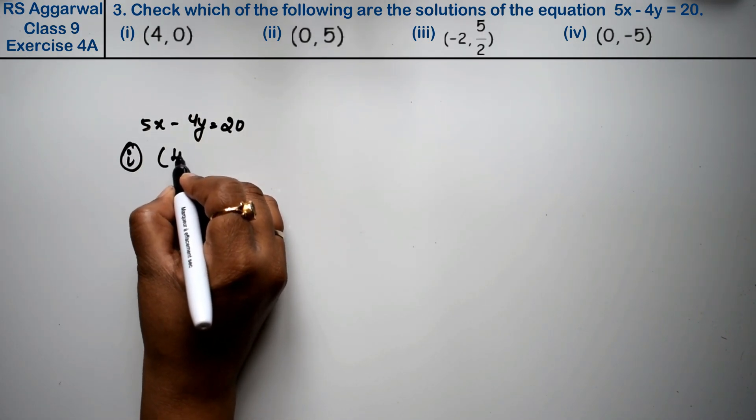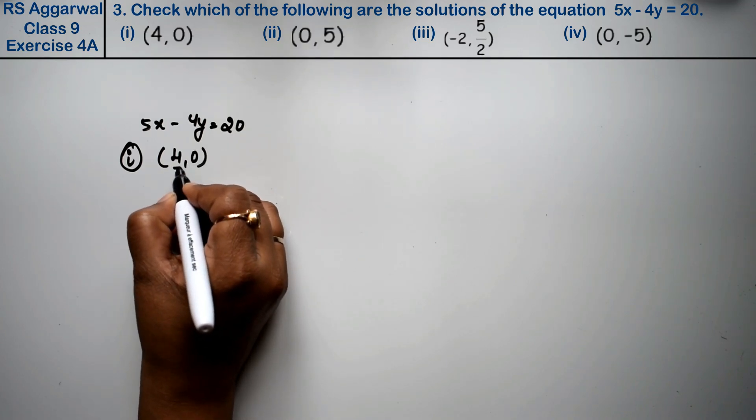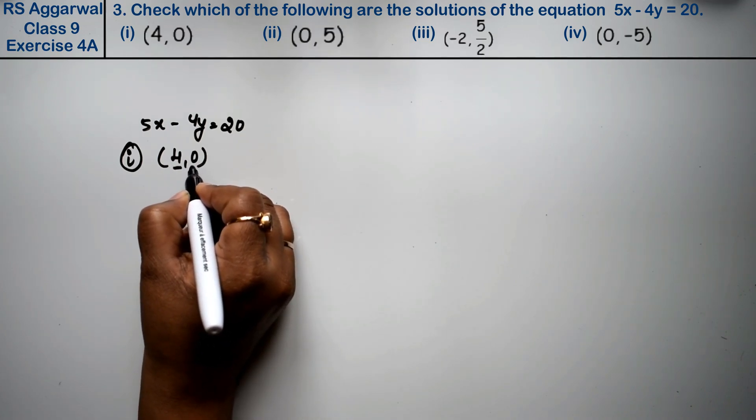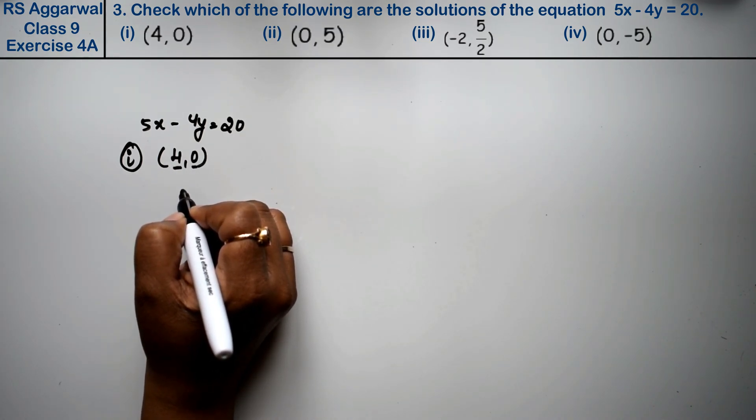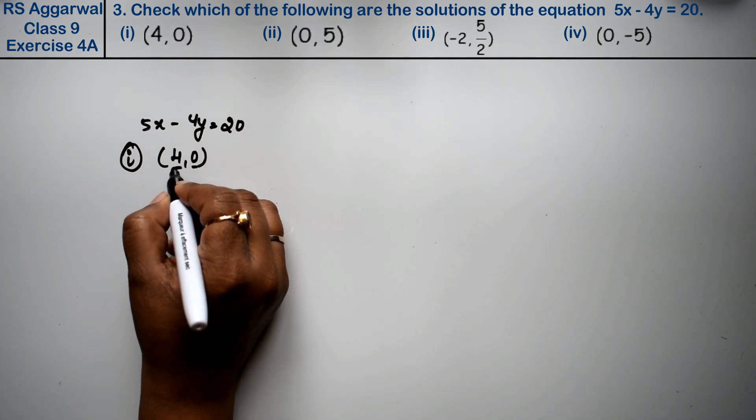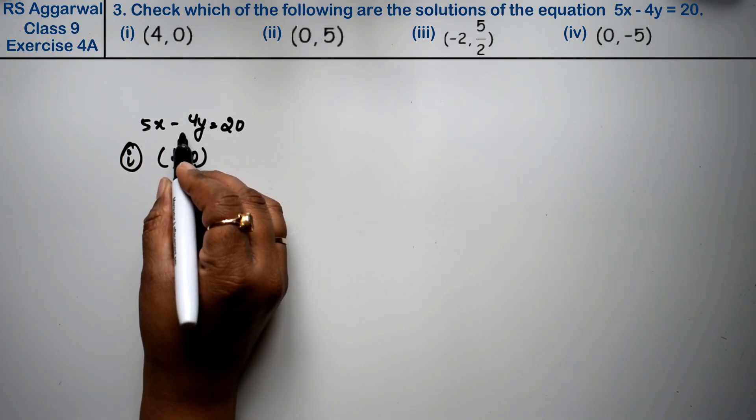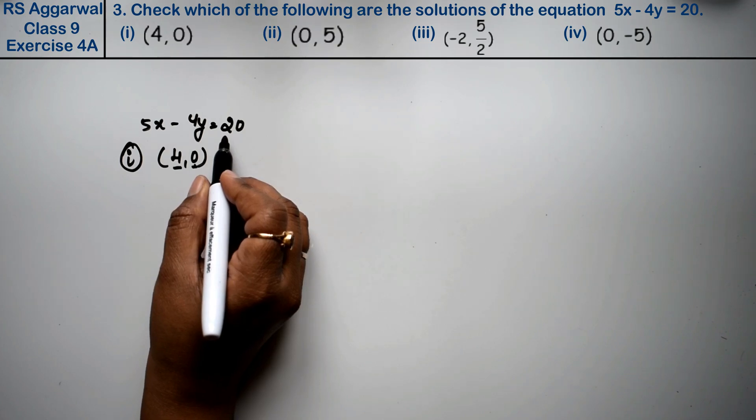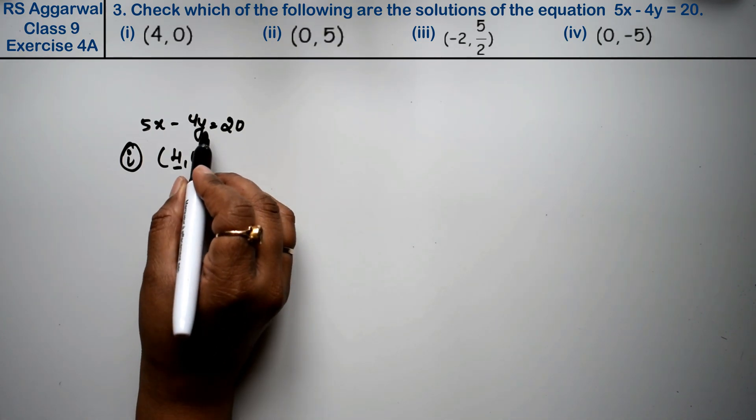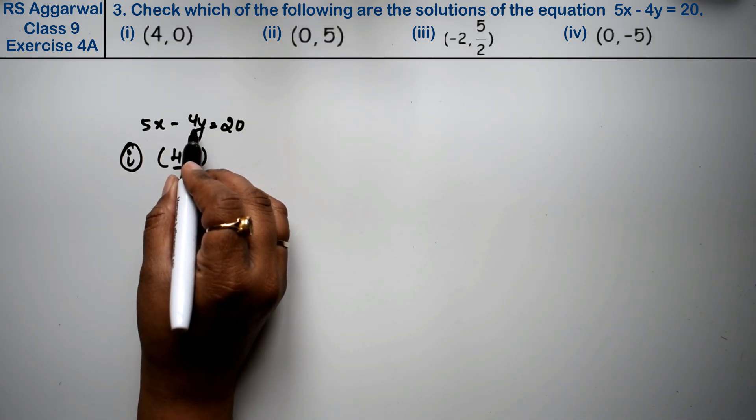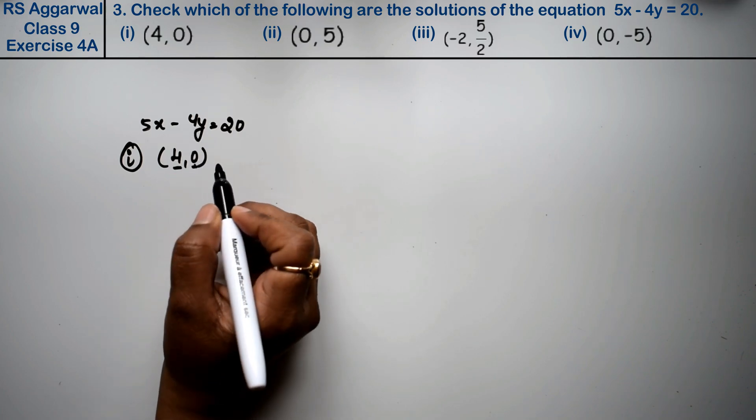We will do the first part of this solution. The first part is 4 and 0. The first value is x and the second value is y. Now we will keep the value of x and y. Is our left and right side equivalent coming or not? If it comes, this means the solution is, otherwise not.